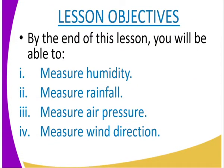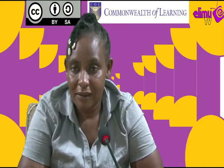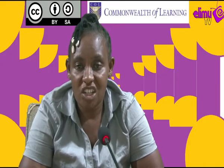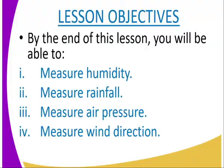Let us look at the lesson objectives. By the end of the lesson, you will be able to measure the humidity, measure rainfall, measure air pressure, and also measure the wind direction.